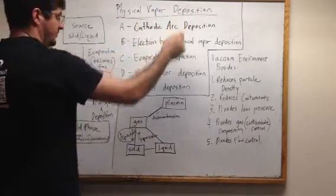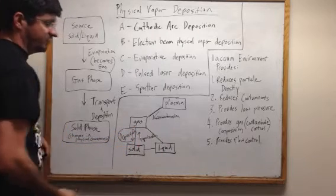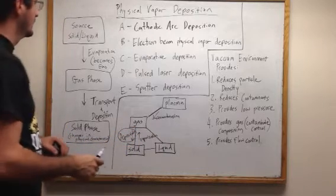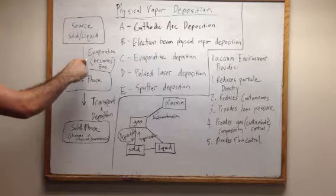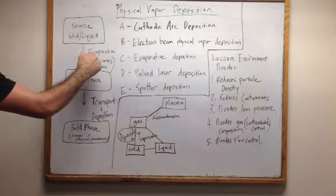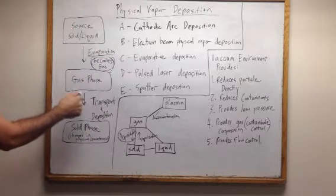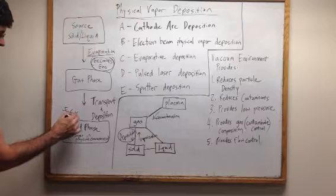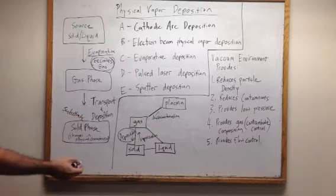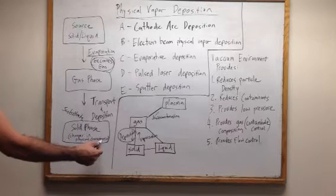In physical vapor deposition, a gas or vapor condenses into a solid. So you have your source — a solid or a liquid — which then becomes an evaporate, meaning it becomes a gas, enters its gas phase, and then gets transported onto a substrate.